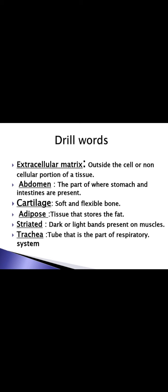Next drill word: striations — dark or light bands present on muscles. The dark or light bands, or wave-like patterns, present on muscles are called striations. A muscle that has these striations present on it is called striated. For example, when we eat meat, the fibrous threads we see are what we call striations.